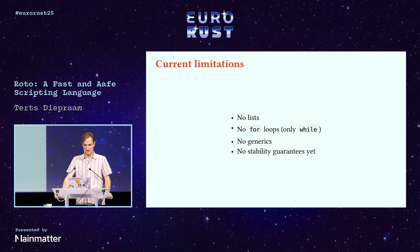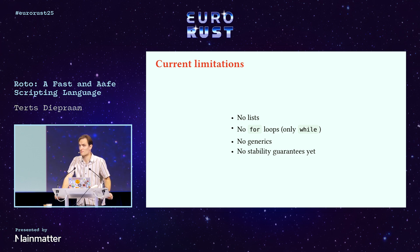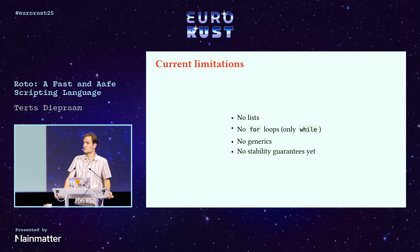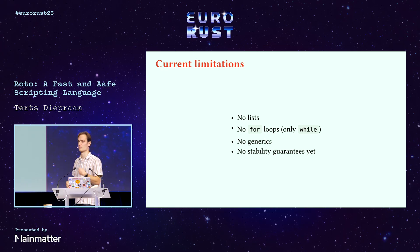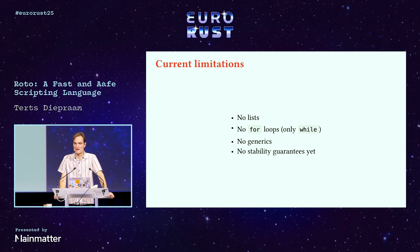Before I hype this up too much, there are a couple of things missing because it's a work in progress. There are currently no lists — which you might really want — and therefore no for loops, though while loops work. Generics are also hard, and you can't register anything with a generic — we need to tell Roto about concrete types. And because we're still changing things a lot, I'm not making many stability guarantees.